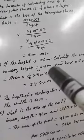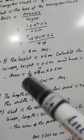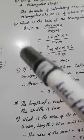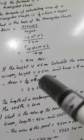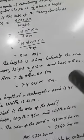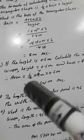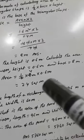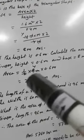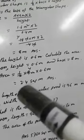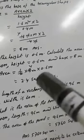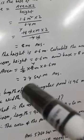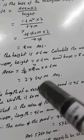If the height is 0.6 meters, calculate the area. Given height is 0.6 meters and base from part B is 8 meters. Area equals half times base times height: half times 8 times 0.6. 8 divided by 2 equals 4, and 4 times 6 equals 24. After the decimal, 1 digit gives 2.4 square meters as the answer.